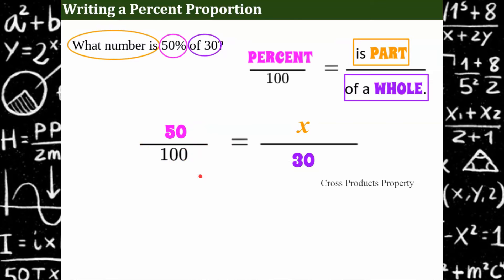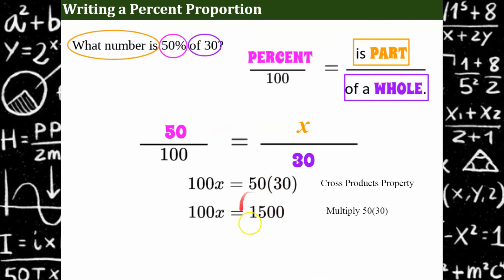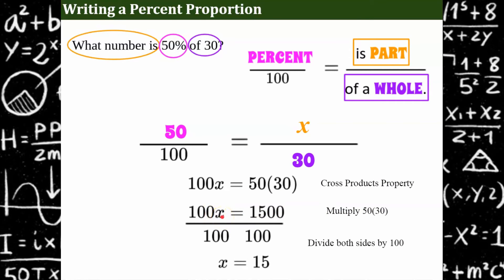Now we're going to use the cross products property to solve. 100 times x is equal to 50 times 30. We multiply 50 times 30 to get 1500. Now divide both sides by 100 to isolate x. We solve and get x is equal to 15. So 15 is 50% of 30 — which makes sense, right? 50% of something is half, and 15 is half of 30.